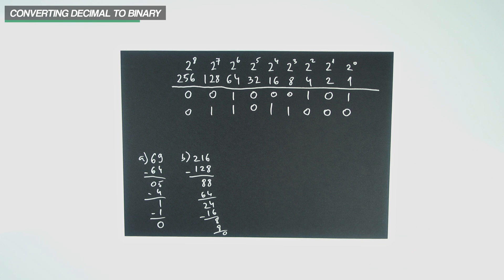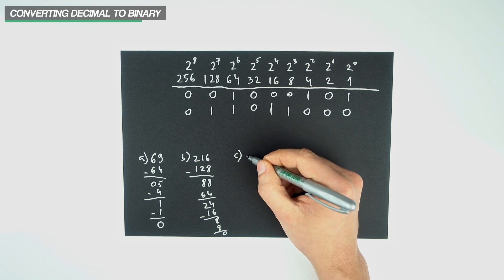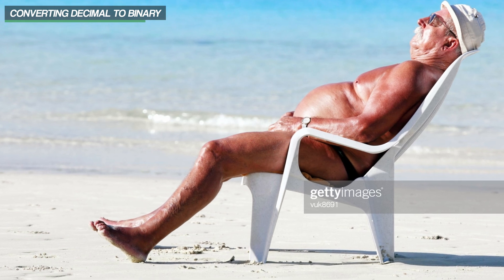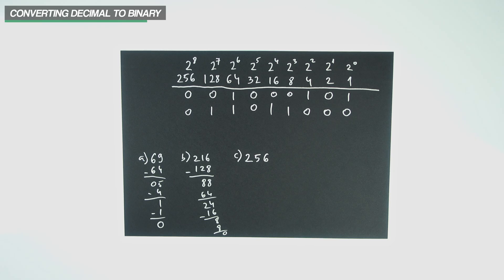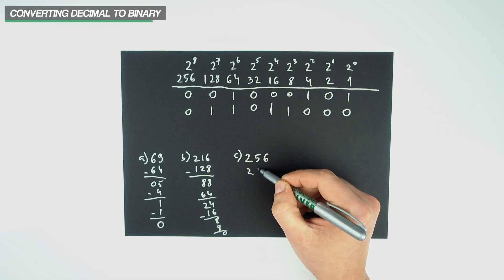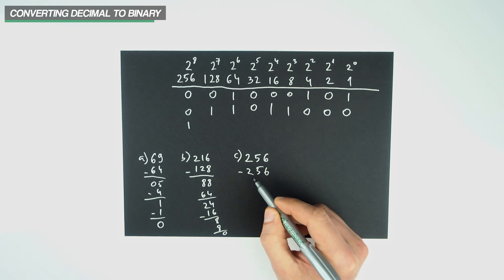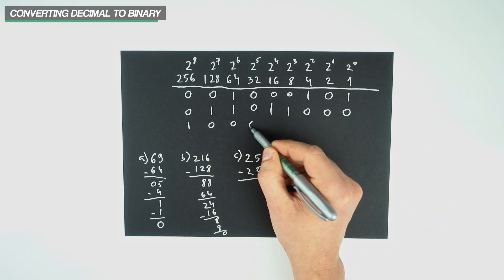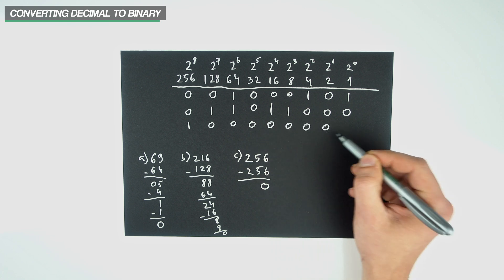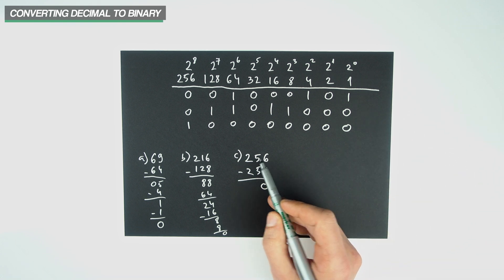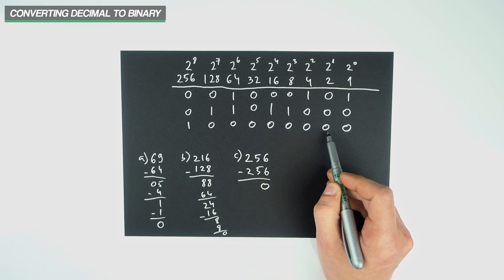Here's one you'll probably be able to solve in seconds. Pause the video and apply what you've just learned to convert the number 256 to binary. 256 most certainly can be subtracted from 256, so we put a 1 in the first column, and since this subtraction brought us to 0, we can no longer subtract the values from the remaining columns, which means that everything else is going to have a 0. Therefore, the binary counterpart to 256 is 1 followed by eight zeros.